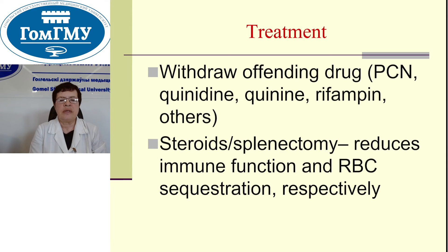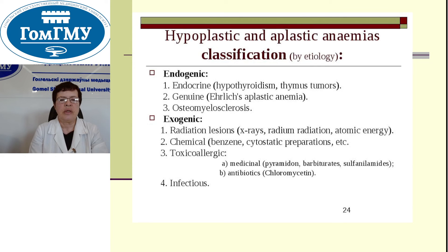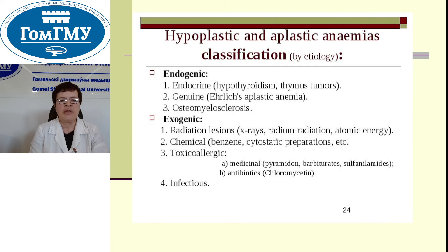Aplastic anemia classification — endogenic and exogenic. Endogenic: endocrine and hypothyroidism, tumors, and osteomyelosclerosis. Exogenic: radiation lesions such as X-rays, radium radiation, atomic energy, et cetera; chemical — benzene, cytostatic preparations, et cetera; toxicoallergic — medications and antibiotics. Can also be infectious.